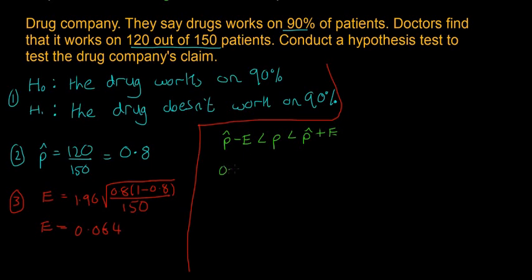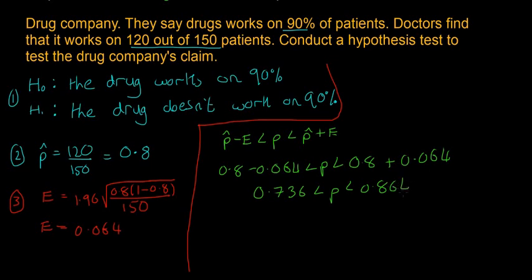So it's going to be P hat minus E less than P less than P hat plus E. So that's our margin of error. So that's going to be 0.8 minus 0.064 less than P less than 0.8 plus 0.064. And so we'll end up with our numbers as 0.736 less than P less than 0.864. So here is our confidence interval.